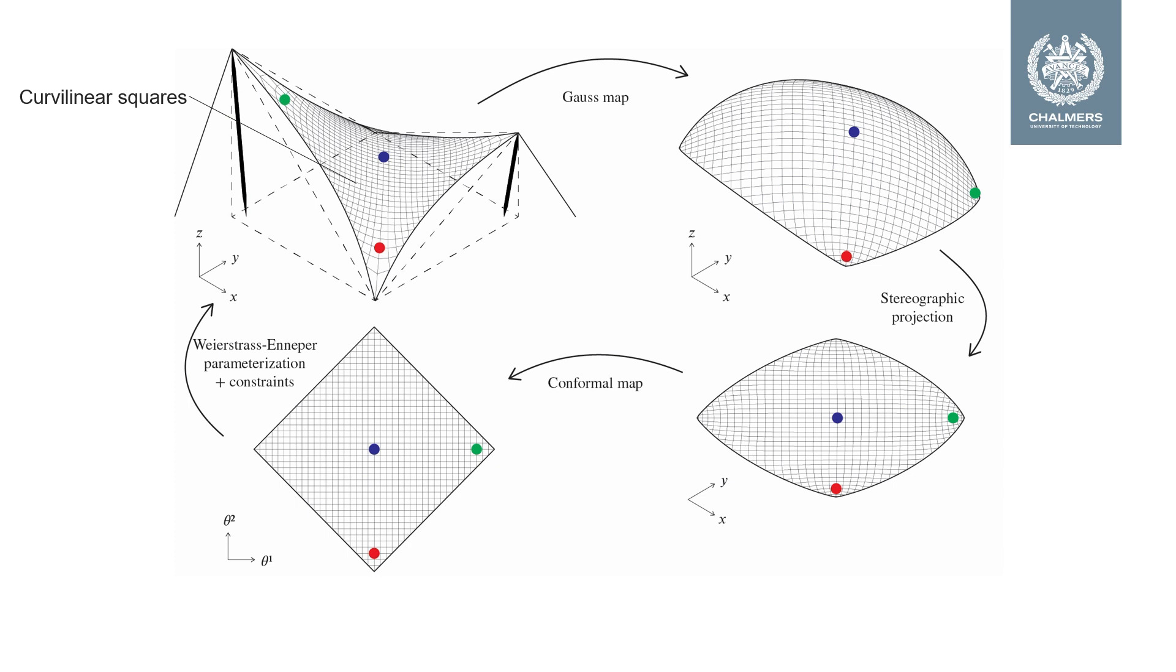This involves the understanding of a number of mappings resulting in various images of the surface like the Gauss map and the stereographic projection. There is also the Weierstrass-Enneper parametrization which we will return to a little bit later.